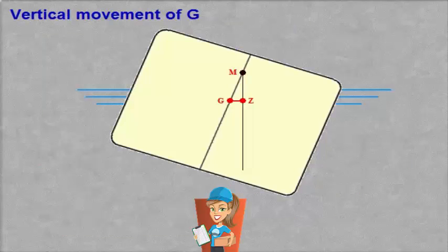If we increase the distance between M and G, we will see that this has a great effect on improving the GZ values. The result is better stability.